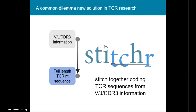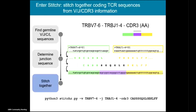Stitcher basically aims to systematize that process, to automate the production of full-length coding TCR sequences. At its simplest, you just have to provide it with that minimally reported TCR information — the V, the J, and the CDR3 — and it will spit out a full-length sequence. It's going to do it in a few different ways depending on the exact format of the information you give it.